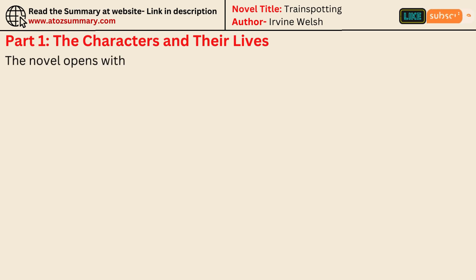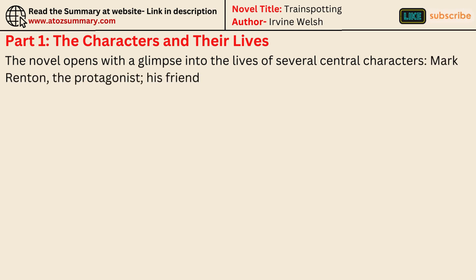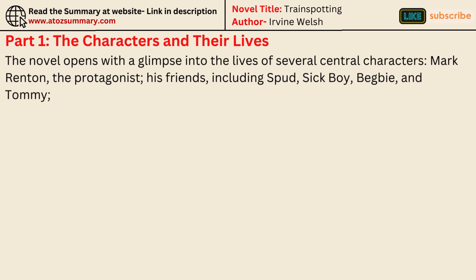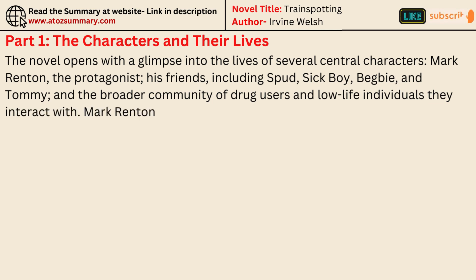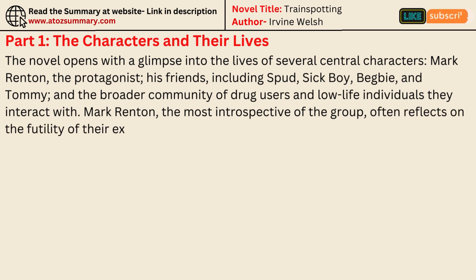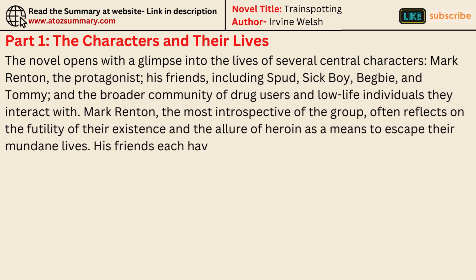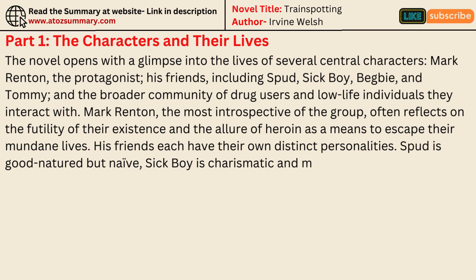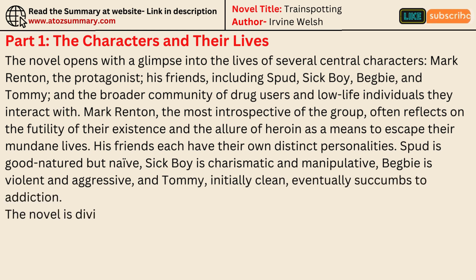The novel opens with a glimpse into the lives of several central characters: Mark Renton, the protagonist, and his friends including Spud, Sick Boy, Begbie, and Tommy, and the broader community of drug users and low-life individuals they interact with. Mark Renton, the most introspective of the group, often reflects on the futility of their existence and the allure of heroin as a means to escape their mundane lives. His friends each have their own distinct personalities: Spud is good-natured but naive, Sick Boy is charismatic and manipulative, Begbie is violent and aggressive, and Tommy, initially clean, eventually succumbs to addiction.